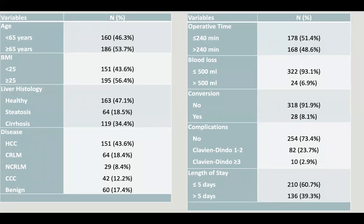This slide shows the baseline characteristics of our patients. We observed 34% of patients with cirrhosis, and the most frequent indication for surgery was HCC. Our surgical results showed a conversion rate of 8%, severe complications in 2.9% of cases, and length of stay greater than 5 days in 39% of patients. No patients experienced death during the postoperative period.